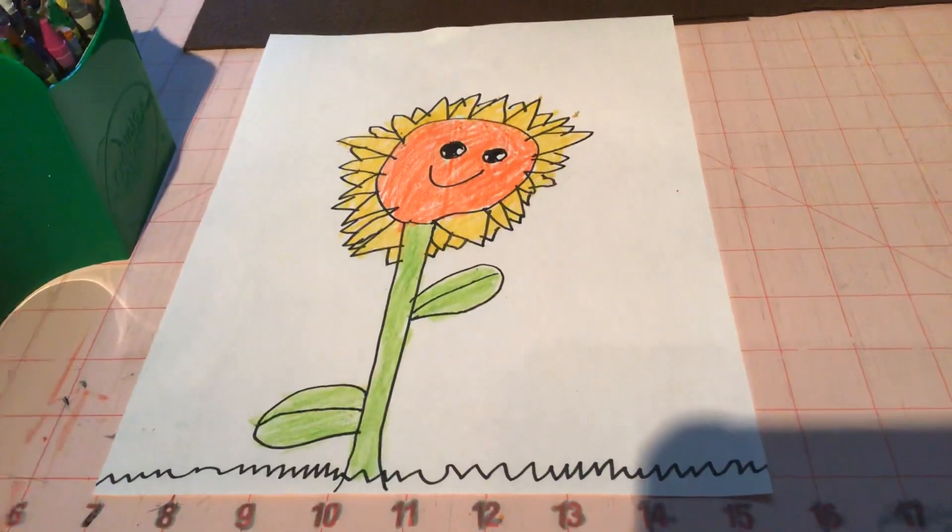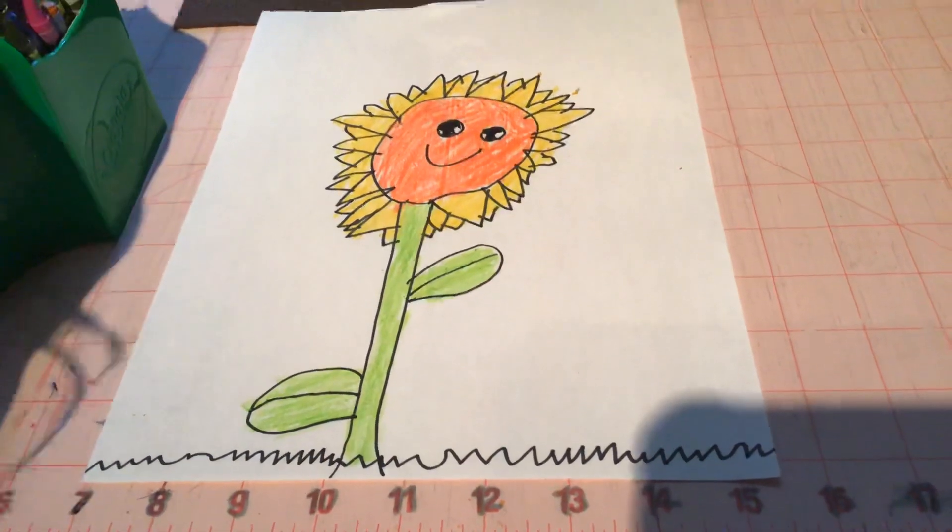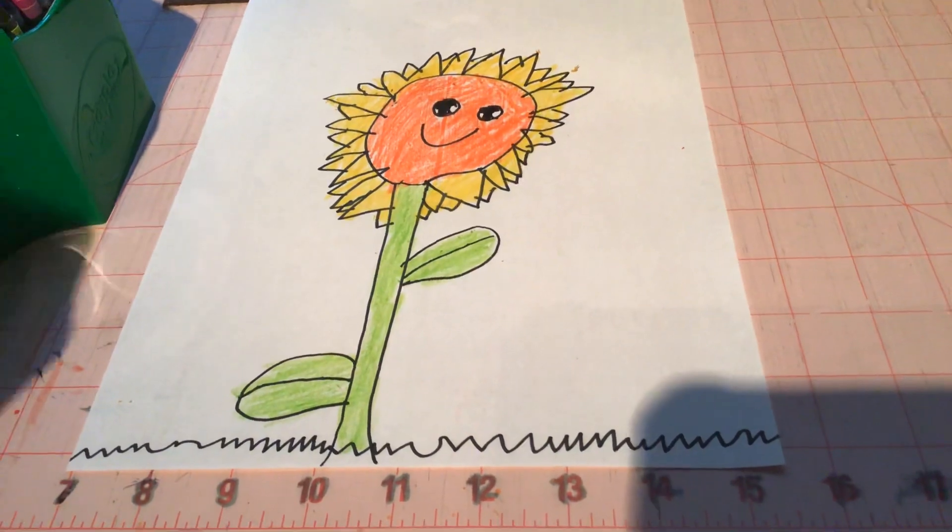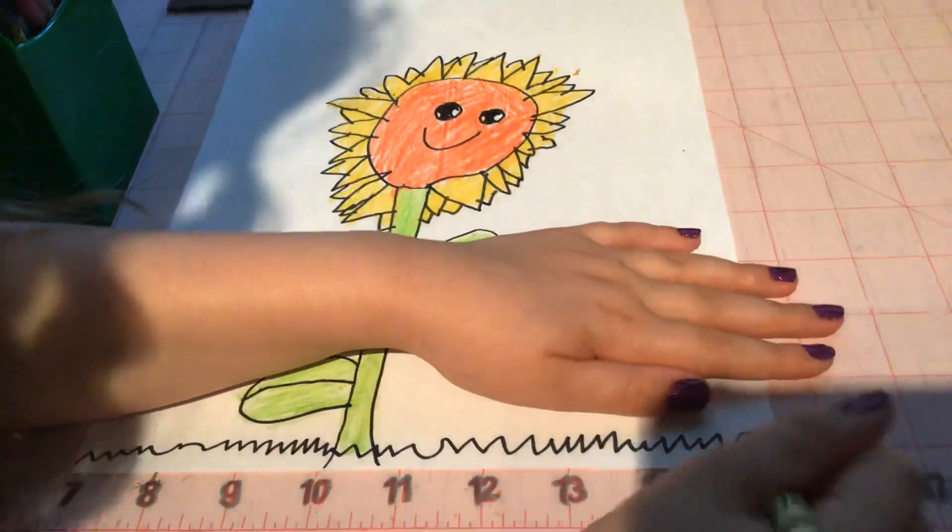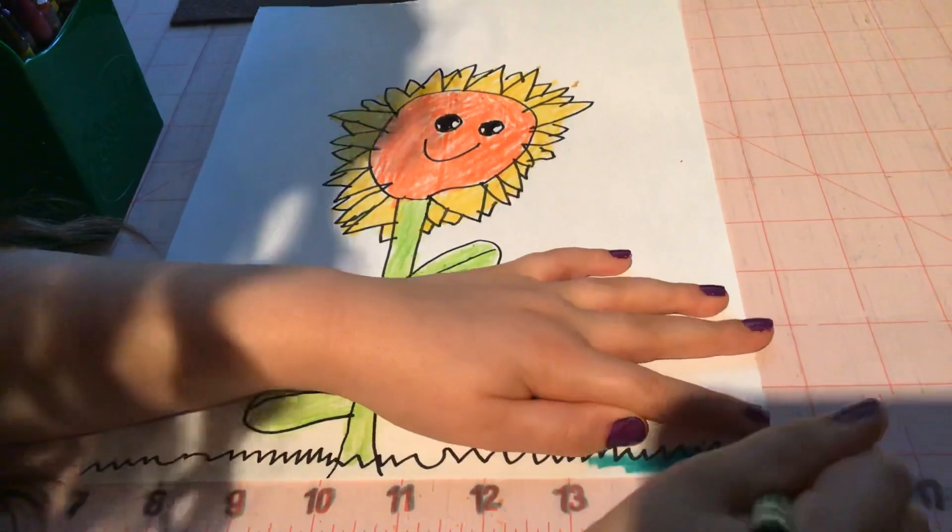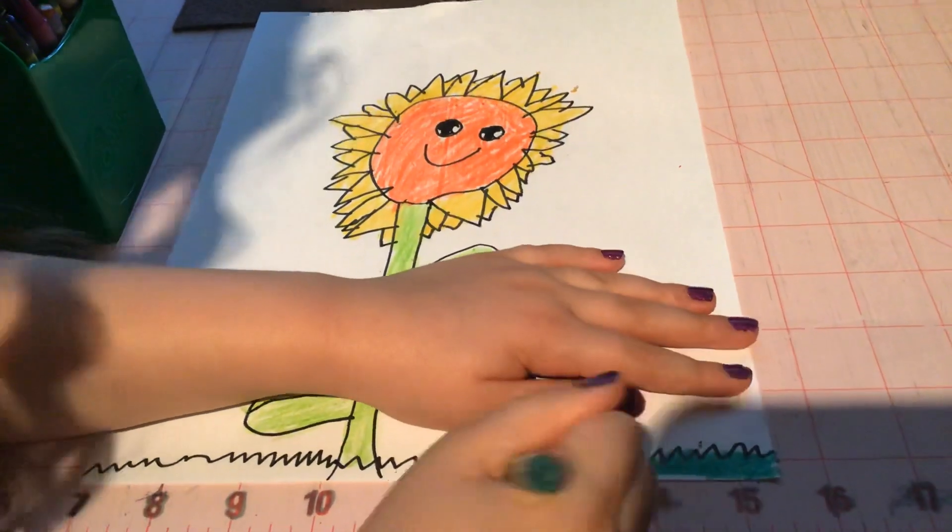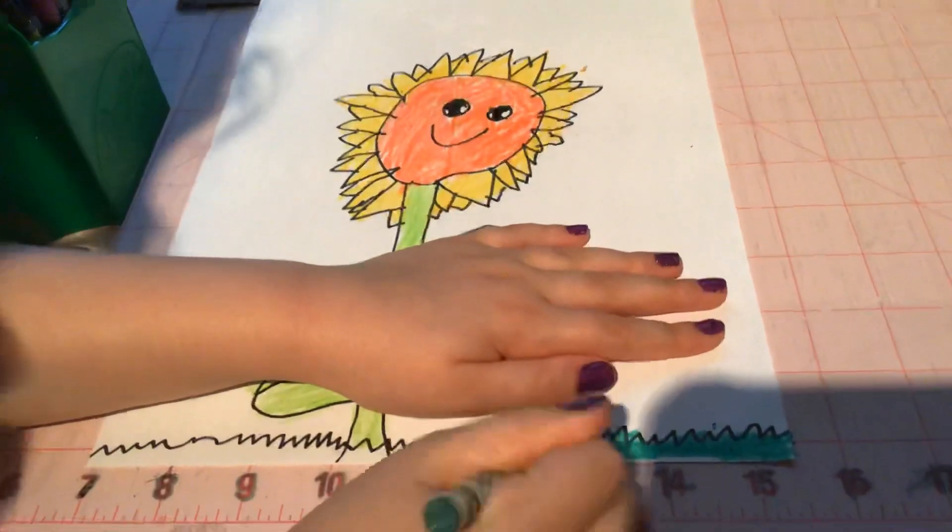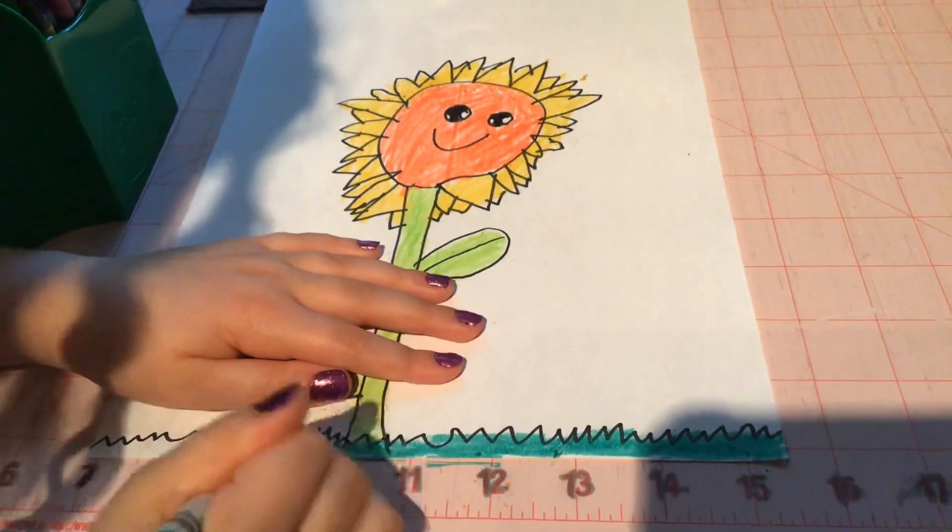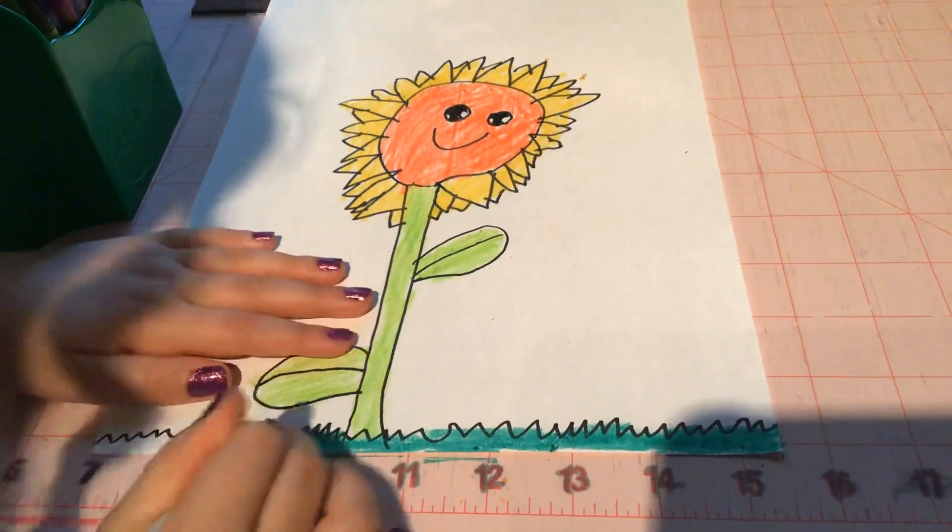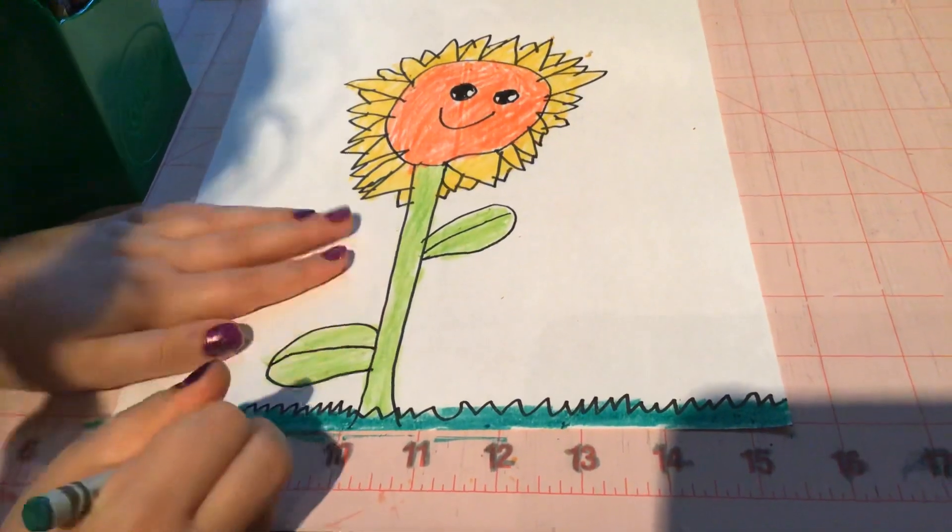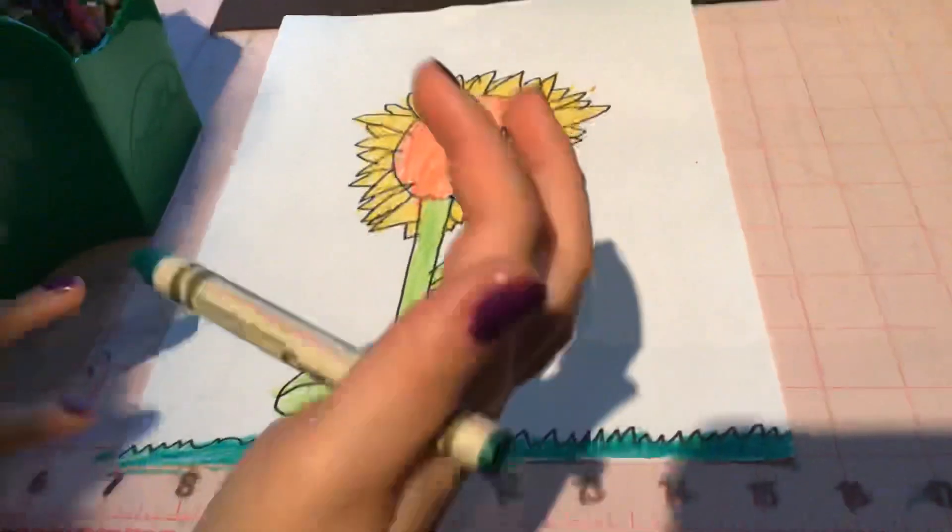So we're done coloring in the petals and the stem. So now we're going to use like a darker green and do the grass. So we're done coloring in the green.